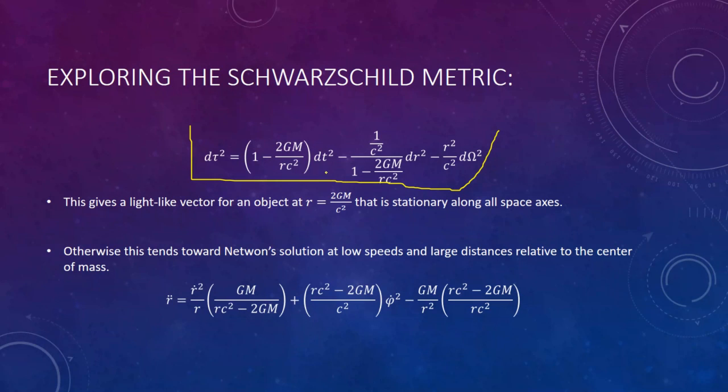This gives us our final Schwarzschild metric. We find something interesting here: that this means there is a light-like vector that's stationary at this position. This is what we call the Schwarzschild radius, and this light-like vector describes the event horizon. It means that light will not move at this radius. It's what interests us about black holes—typically the fact that light will come to a stop at this area, even though light moves at the maximum speed of anything in the universe.